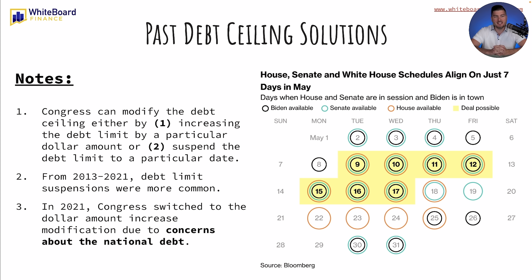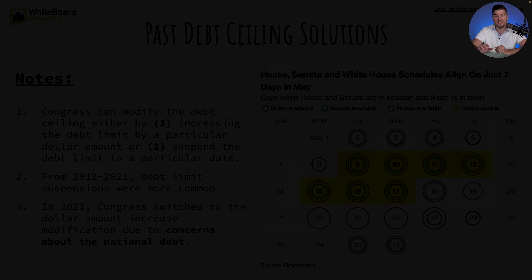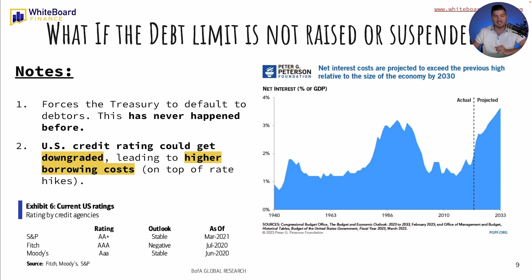Congress can modify the debt ceiling either by increasing the debt limit by a particular dollar amount or suspending the debt limit to a particular date. From 2013 to 2021, the debt limit suspensions were more common. In 2021, Congress switched to the dollar amount increase modification due to concerns about the national debt.